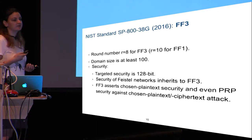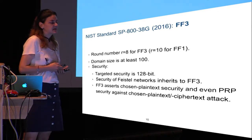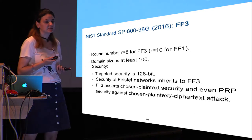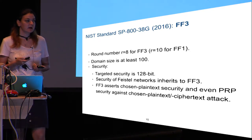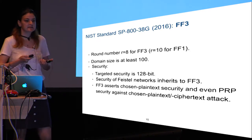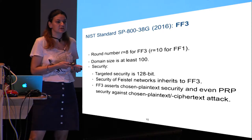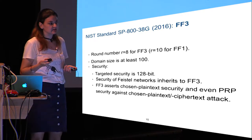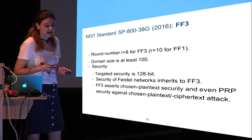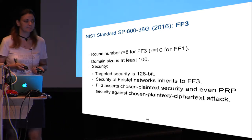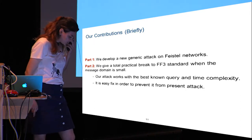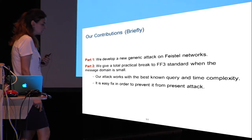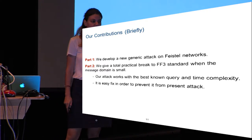The FF3 specification in NIST standards is: the number of rounds is 8, the domain size must be at least 100, and the targeted security is 128 bits. Since FF3 is based on a Feistel network, all security notions from Feistel networks are inherited by FF3. FF3 additionally asserts PRP security against chosen plaintext and ciphertext attacks. I'd like to introduce our contributions in two parts — the first part covers generic attacks on Feistel networks without mentioning FF3.